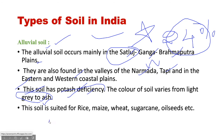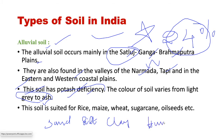Soil composition includes sand, silt, and clay, as well as organic matter — also called humus — plus gases and minerals and water.